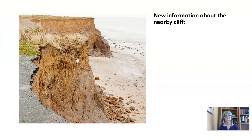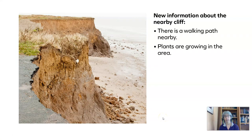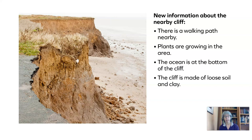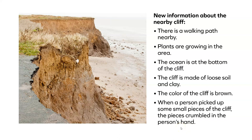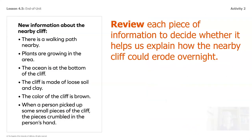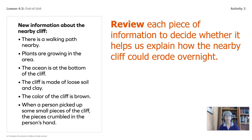Let's take a look at the new information. There is a walking path nearby. Plants are growing in the area. The ocean is at the bottom of the cliff. The cliff is made of loose soil and clay. The color of the cliff is brown. When a person picked up some small pieces of the cliff, the pieces crumbled in the person's hand. Let's review each piece of information to decide whether it helped us explain how the nearby cliff could erode overnight.